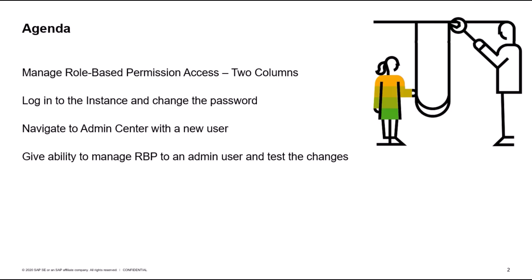In this video I will share with you some details about the manage role-based permission access tool and its two columns. Then I will log into the instance with a new user that I created from provisioning and I will change my password — this will be my step number one. I will then navigate to admin center and give my user the ability to manage role-based permission access. Then I will log out and come back to the instance to test my changes.